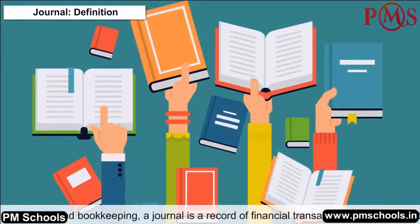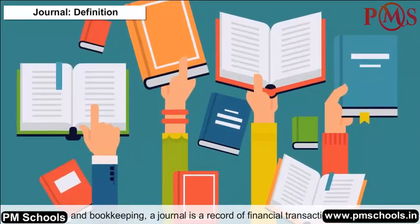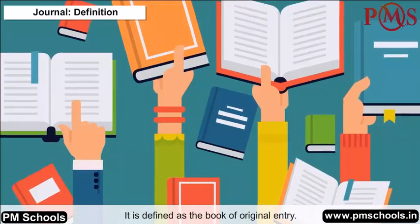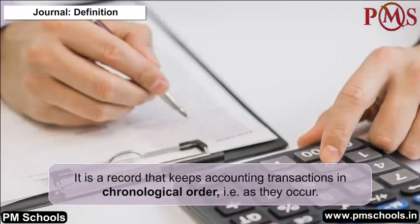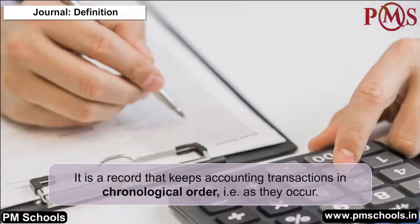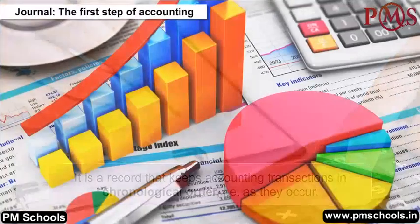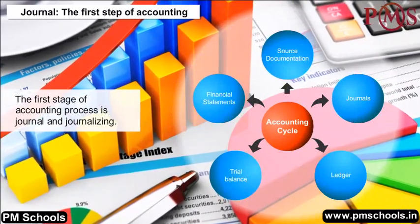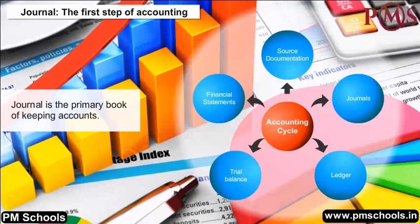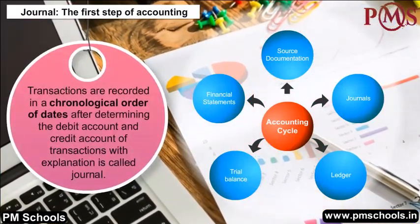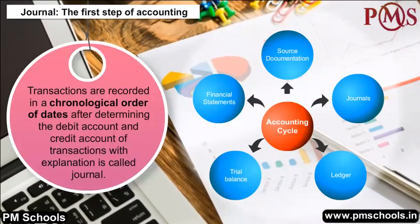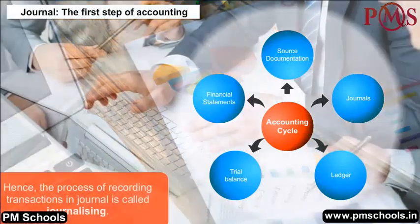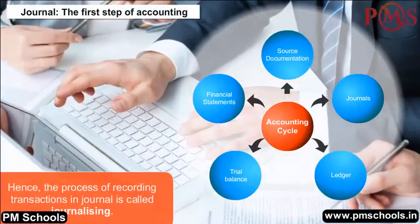Journal Definition: In accounting and bookkeeping, a journal is a record of financial transactions in order by date, often defined as the book of original entry. A journal keeps accounting transactions in chronological order — that is, as they occur. The first stage of the accounting process is journal and journalizing. The book wherein transactions are recorded in chronological order of dates, after determining the debit and credit accounts with explanation, is called a journal.